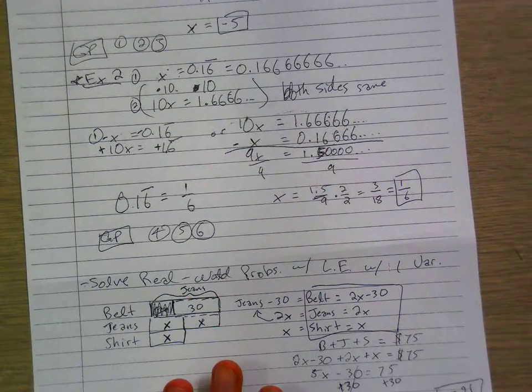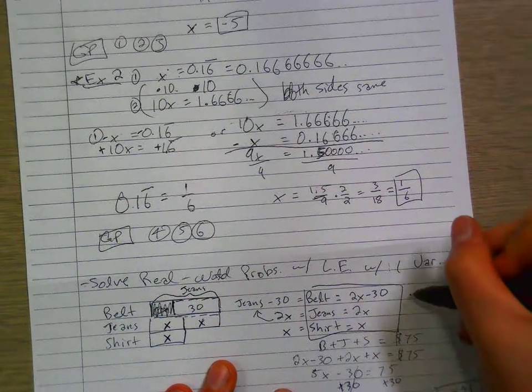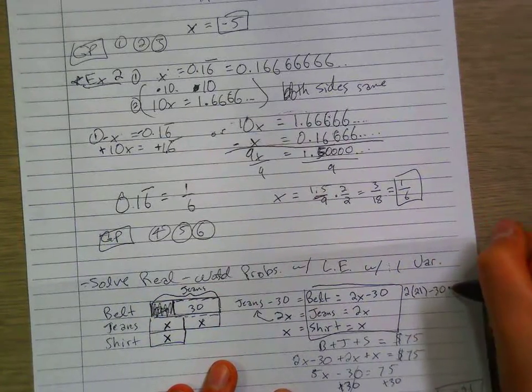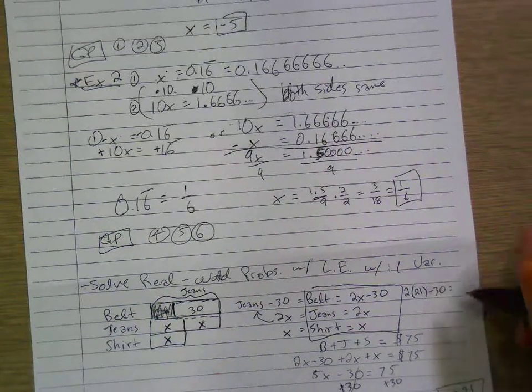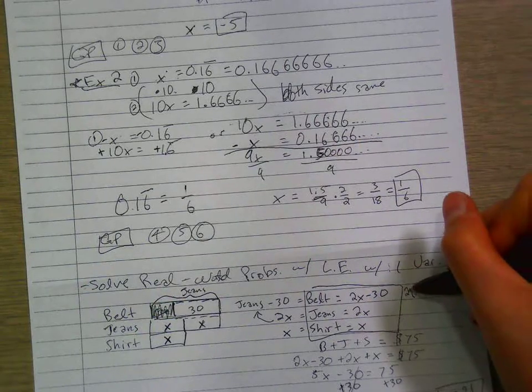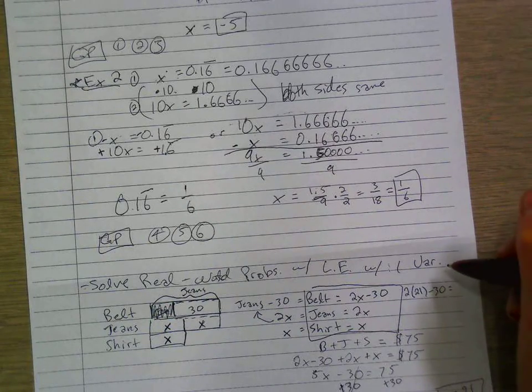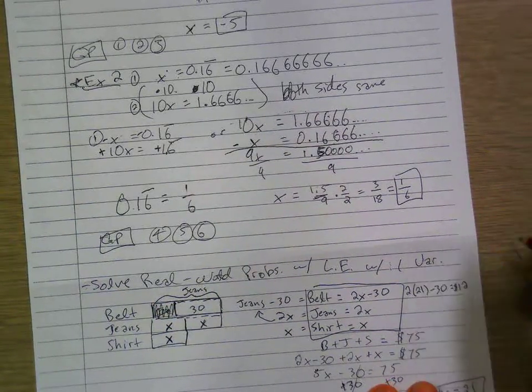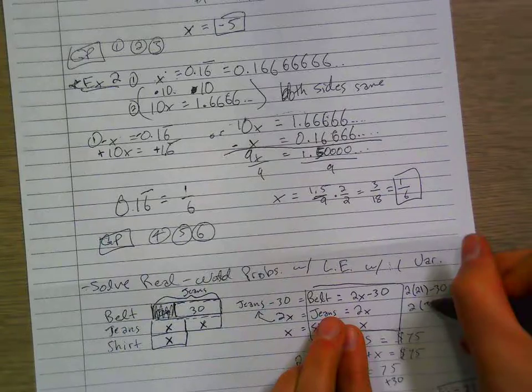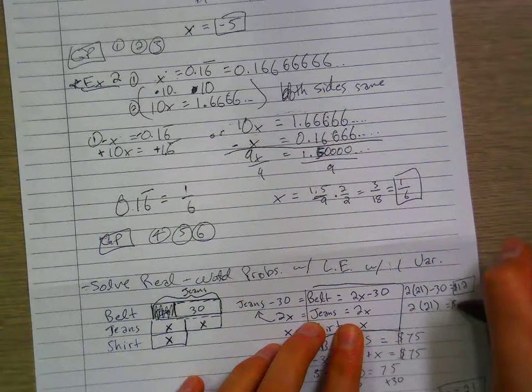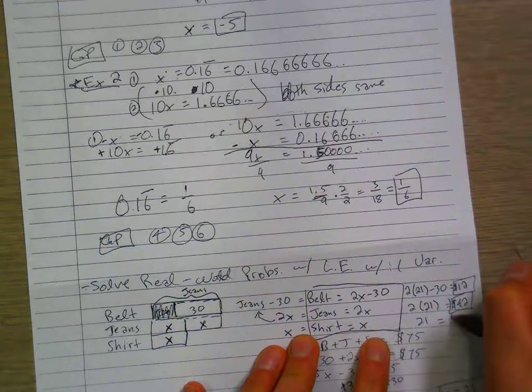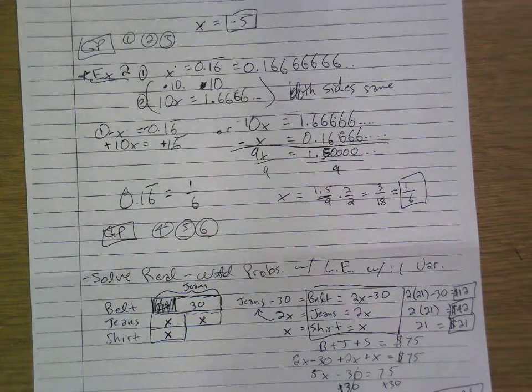So now we can figure out the cost of each of them. The belt is going to be 2 times 21, because x is 21, minus 30, which equals 42 minus 30, which is 12. Then 2x is 2 put the x in which is 21, and that gives us 42 dollars. Then shirt x is just the 21, so that gives us 21 dollars. So now we know how much each can cost.